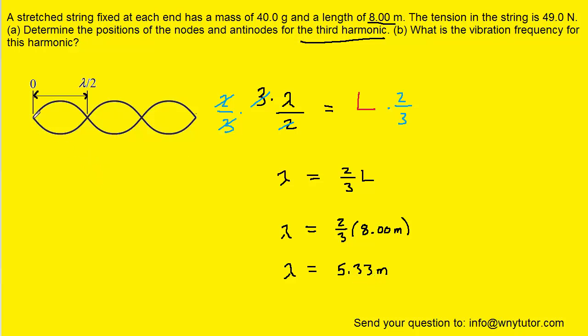And to do that, what we're going to do is try to find the position of the nodes first. And in our picture the nodes would occur here, here, here, and here, so there will be four of them. We can see clearly that the first node is located at zero meters.